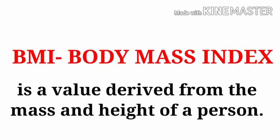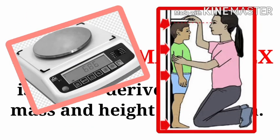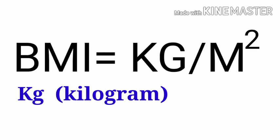What is BMI? BMI, or Body Mass Index, is a value derived from the mass and height of a person. BMI is defined as body mass divided by the square of body height, universally expressed in units of kilograms per meter squared.